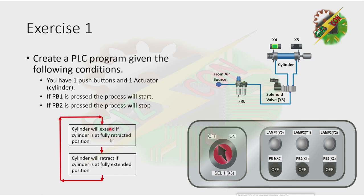As you can see, we have our process here. The cylinder will extend if the cylinder is at fully retracted position. The cylinder will retract if the cylinder is at fully extended position. And this cycle will repeat unless we press PB2. Let's have our demonstration.